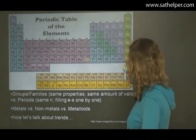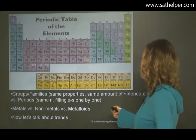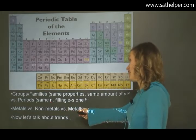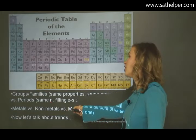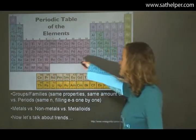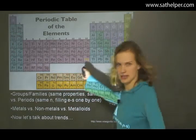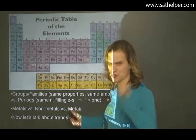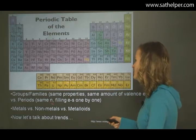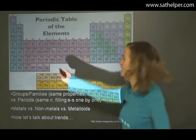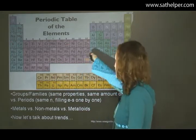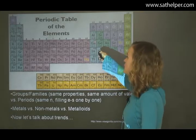So the groups — you want to remember — they have the same properties because they have the same number of valence electrons. The periods are in the same principal energy level. As we go across, it's the same principal energy level, except of course for the D block, which is always minus one. Remember that. So the periods represent the energy level, and as you go, you put in more and more electrons.